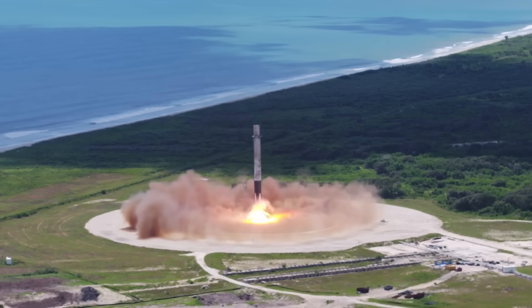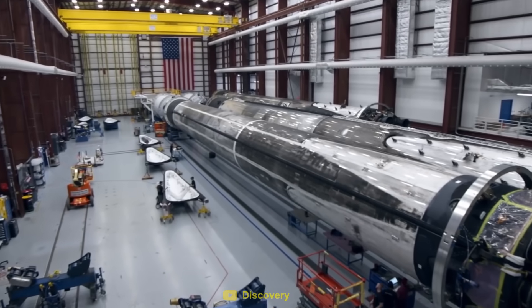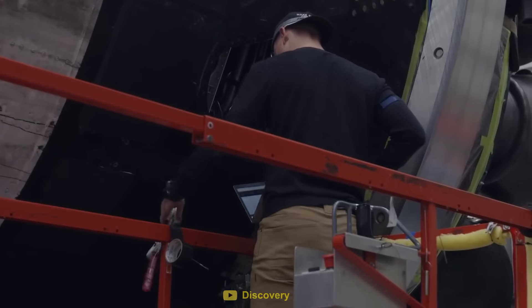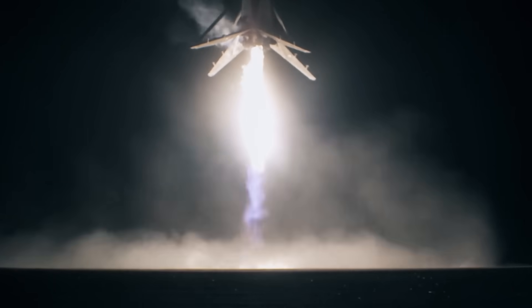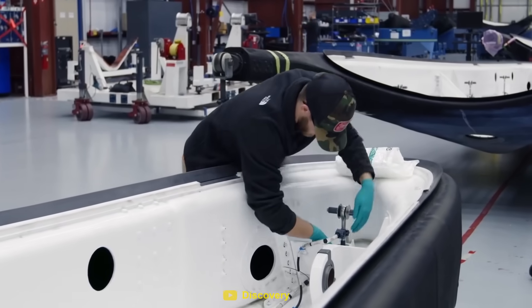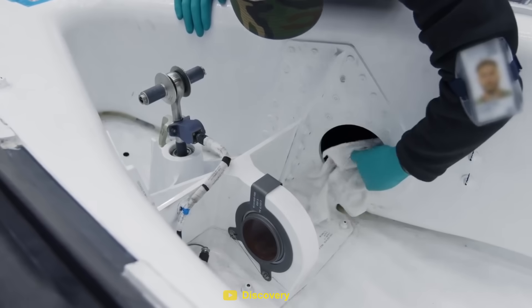For the Falcon 9 landings, the booster needs to be transported back to a refurbishment hangar, where many components are replaced and inspected. One of the most critical parts in their refurbishment process is the landing legs. All of this takes an enormous amount of time, which isn't an option for Super Heavy.